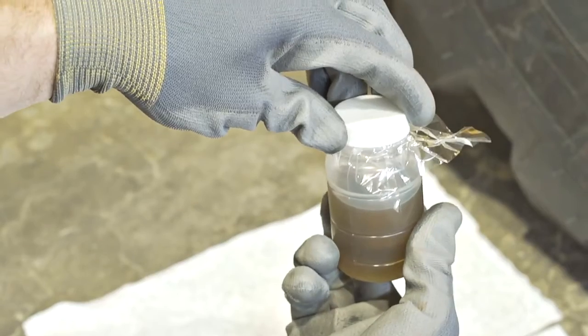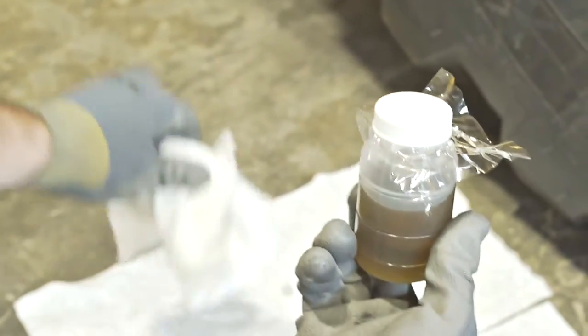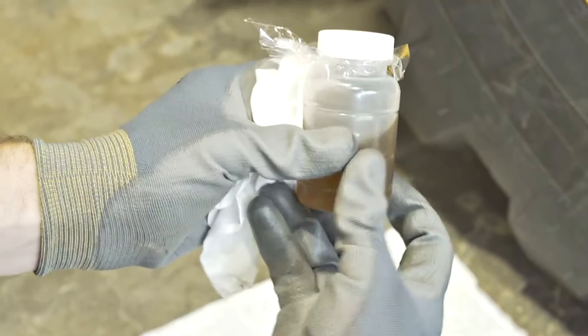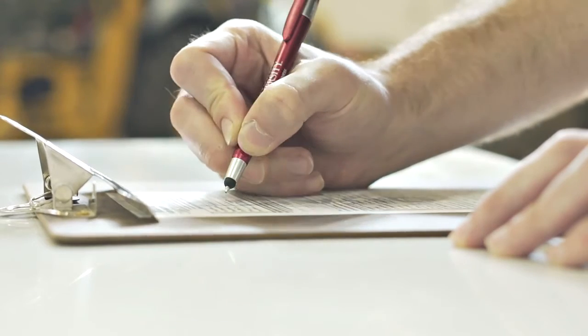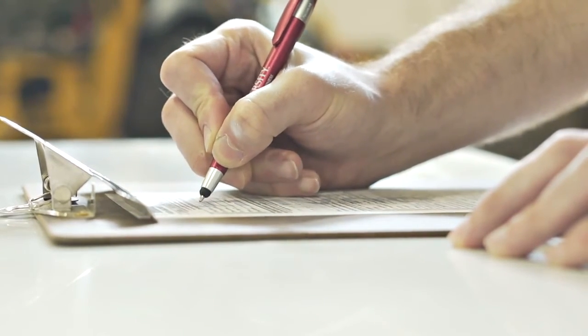Remove the bottle from the vacuum pump and secure the cap on the bottle. Fill out the sample information form completely and submit the form and sample to the designated regional lab for testing.